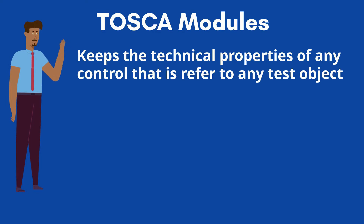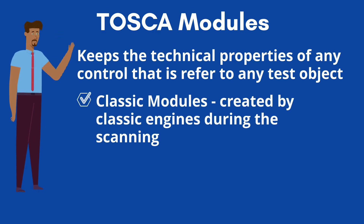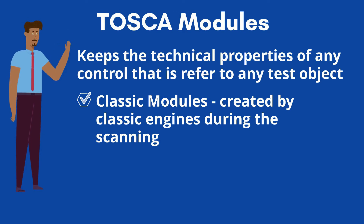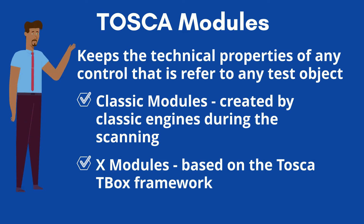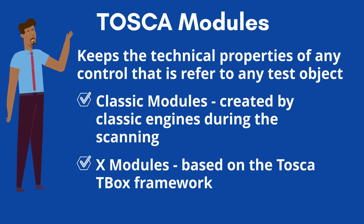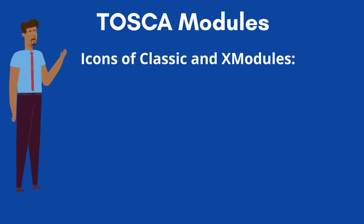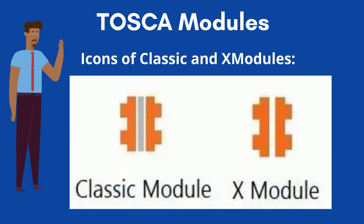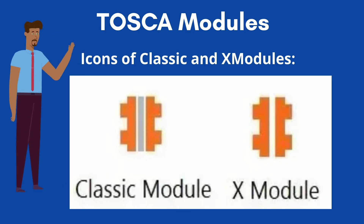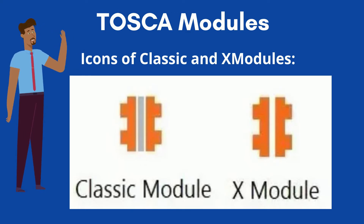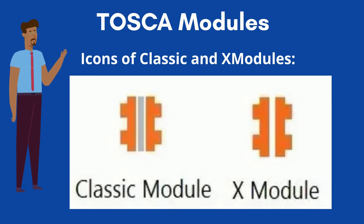Tosca modules are classified into two categories based on the architecture. Classic modules, which are created by classic engines during the scanning. And X modules, which are based on the Tosca T-Box framework. The icons of modules are similar to this. Each component of a module is known as a module attribute and the components are known as controls. The classic modules have classic module attributes and on the other hand, the X modules have X module attributes.